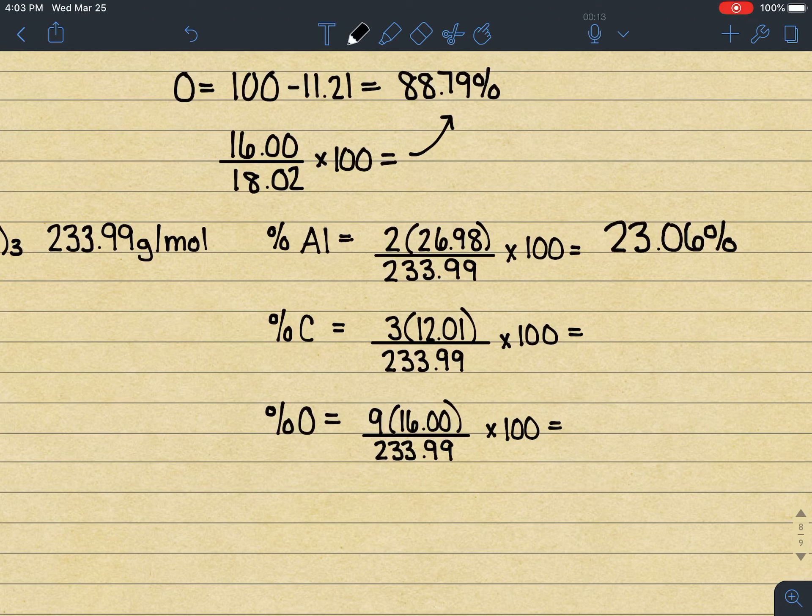All right, and then for carbon, there are actually three carbons in that compound. So we're going to do 3 times 12.01 divided by 233.99, and then times 100 would be 15.398, but we're rounding to the hundredth place. We're going to round that to 15.40.